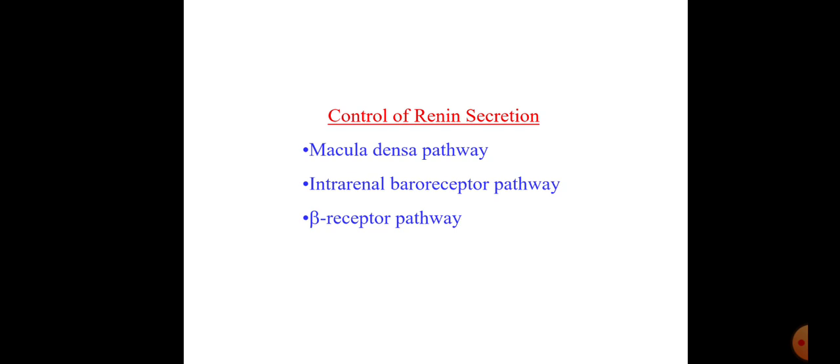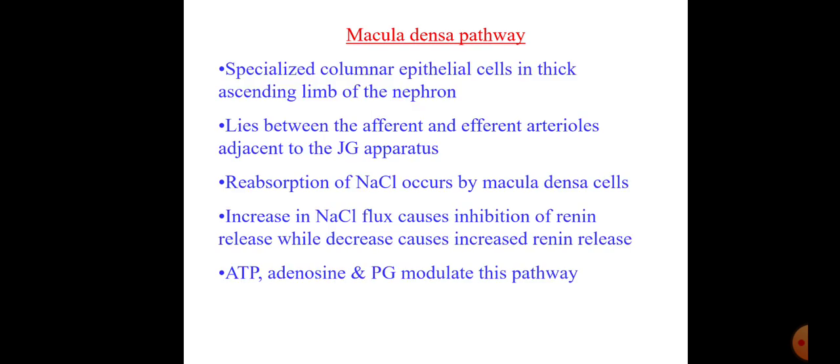There are three ways to control renin secretion: the macula densa pathway, the intrarenal baroreceptor pathway, and the beta receptor pathway. The macula densa consists of specialized columnar epithelial cells in the thick ascending limb of the nephron, lying between the afferent and efferent arterioles adjacent to the juxtaglomerular apparatus. Reabsorption of sodium chloride occurs by macula densa cells. Increased sodium chloride flux causes inhibition of renin release, while decreased flux causes increased renin release.